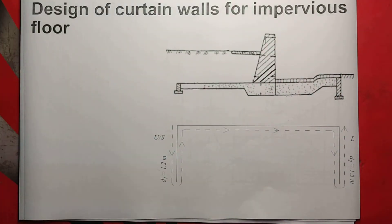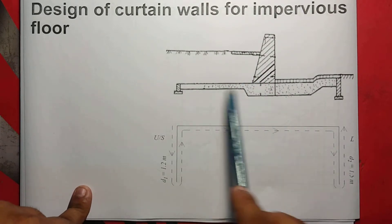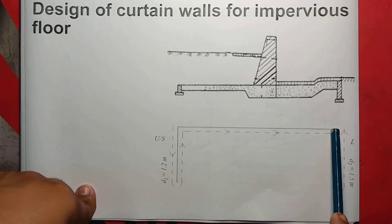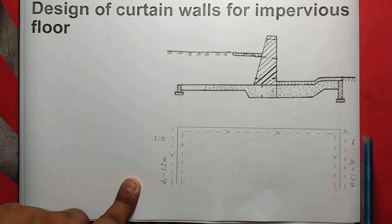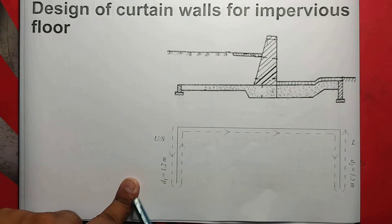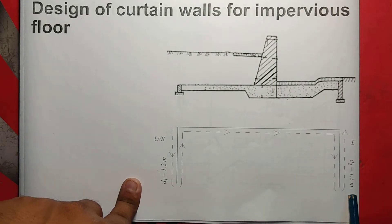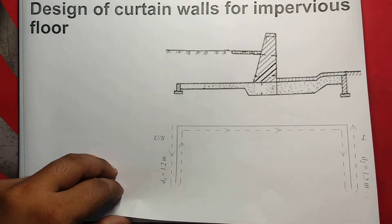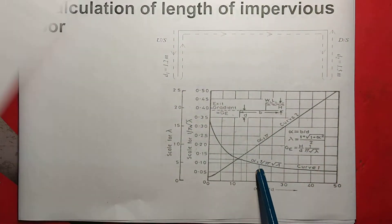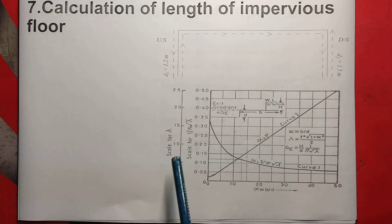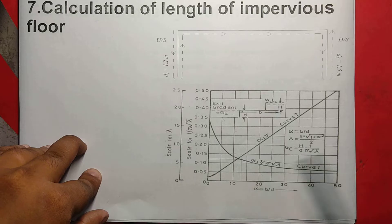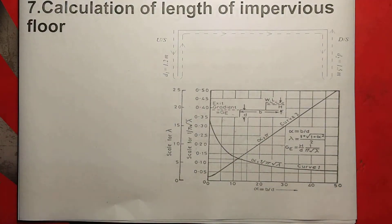Now we have to find the figure here — a geometric figure showing how we obtain the numbers. I will draw a line representing the floor. Upstream side is the curtain wall. I represent D1 as 1.2 meters and D2 as 1.5 meters. This step is very important. This is the calculation of length of the impervious floor, using the head loss exit gradient curve.